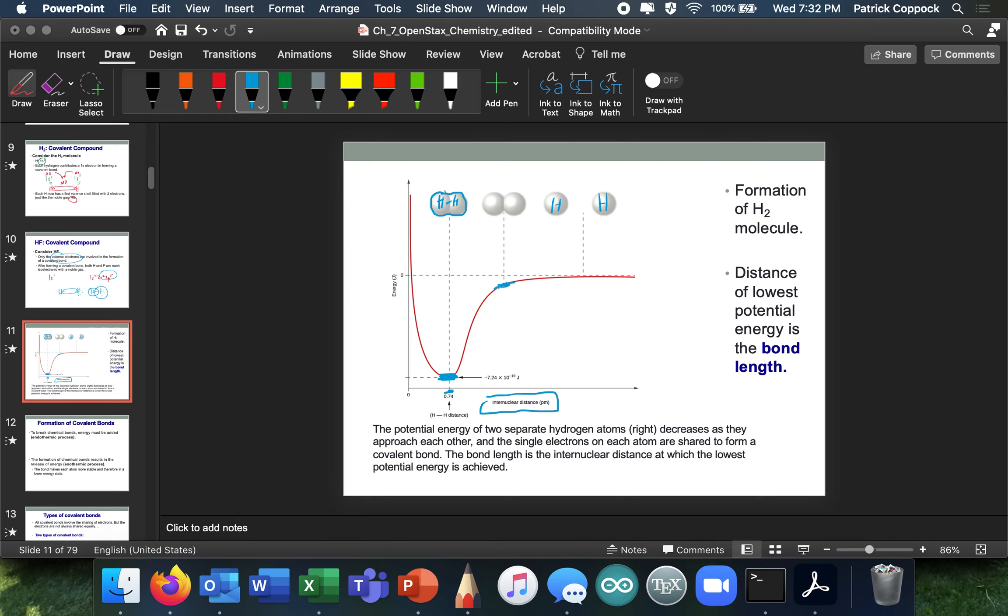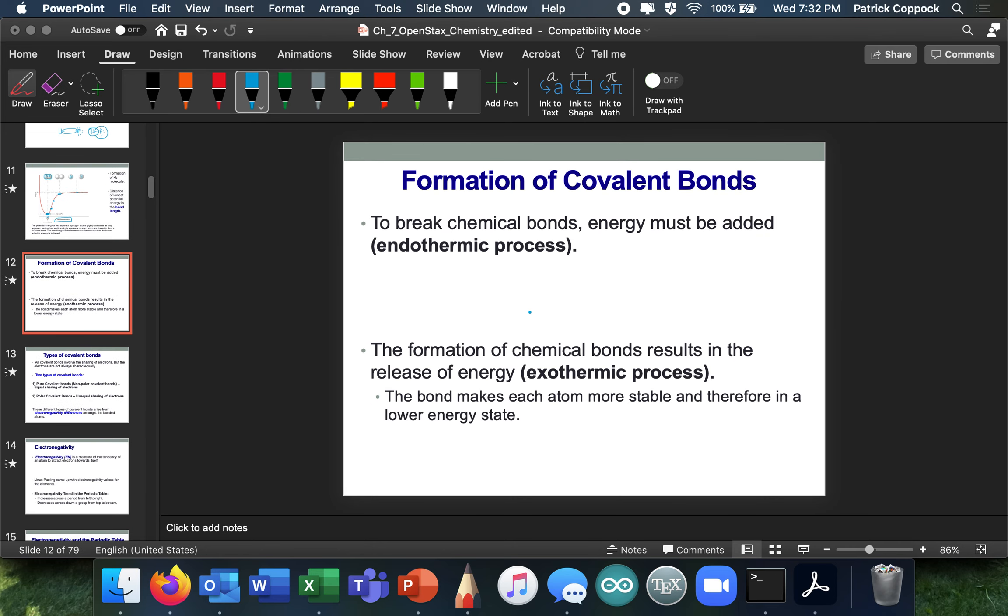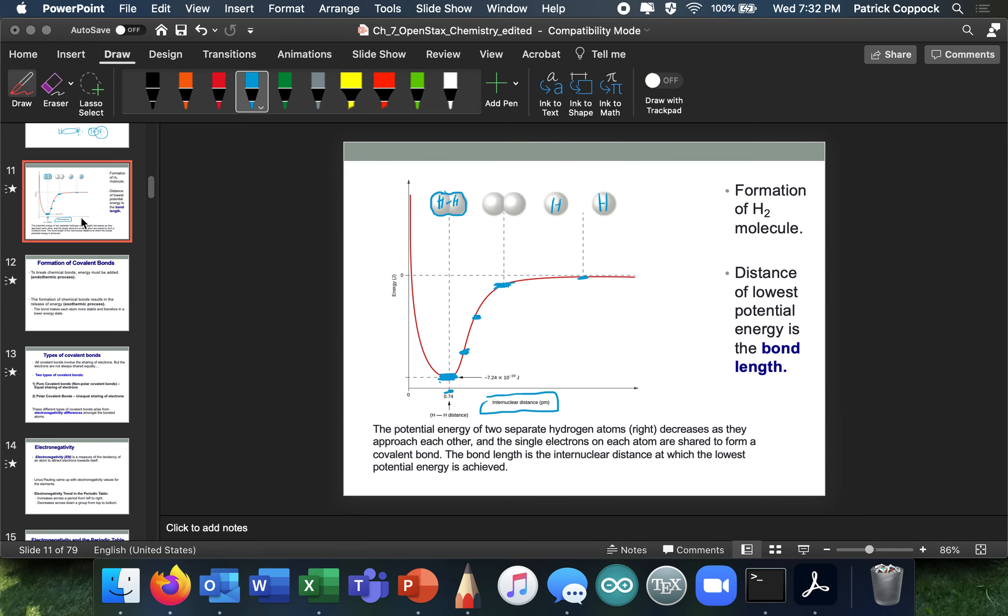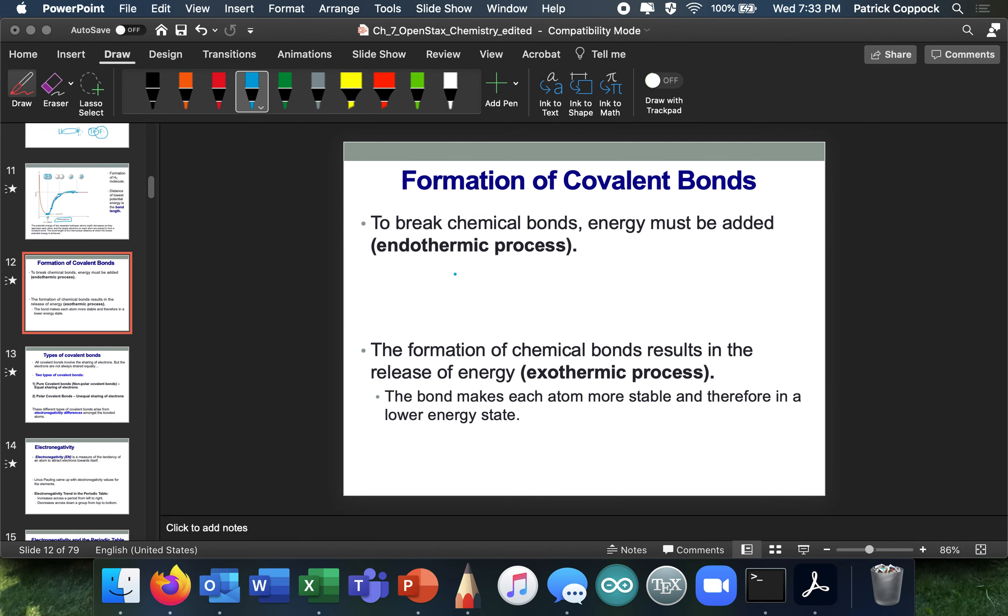My two hydrogens right here, and the ideal bond length is when they're just right, and now both hydrogens feel like they've got two electrons in their outer shell. So this is a common graph that's used to show ideal bond lengths. You can imagine if I stretch these out a little bit, it's not so comfortable. Stretch it out even more, not so comfortable. By the time you get here, we might as well not even be bonded. So to break chemical bonds, energy must be added, which is an endothermic process. In order to break this, I'm going to add some energy and bring energy up. The formation of chemical bonds releases energy, which is exothermic. The bond makes each atom more stable, and therefore it's lower in energy.